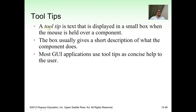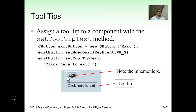A tooltip is text displayed in a small box when the mouse hovers over a component, giving a short description of what the component does. Most GUI applications use tooltips as concise help. Assign a tooltip using the setToolTipText method. For example, writing 'Click here to exit' will display that message as a tooltip, and the mnemonic letter will appear underlined.